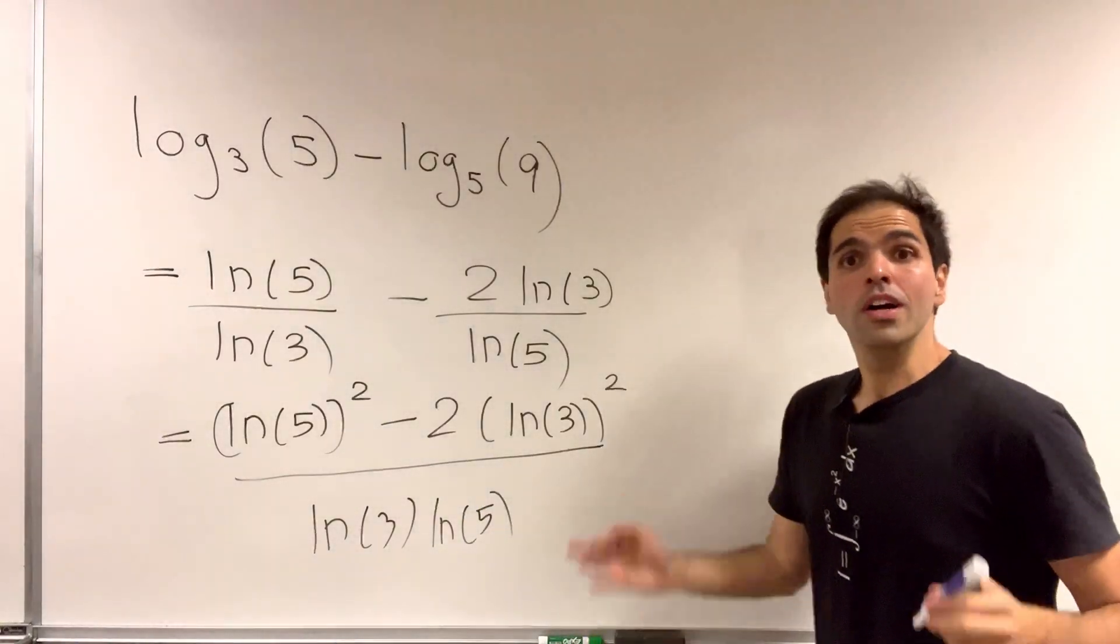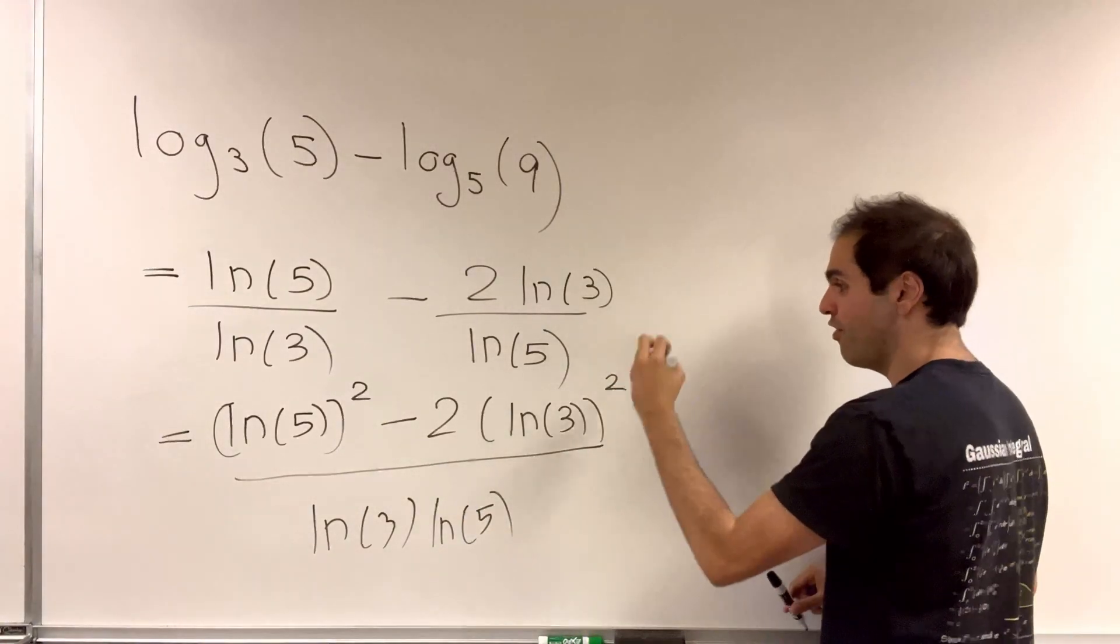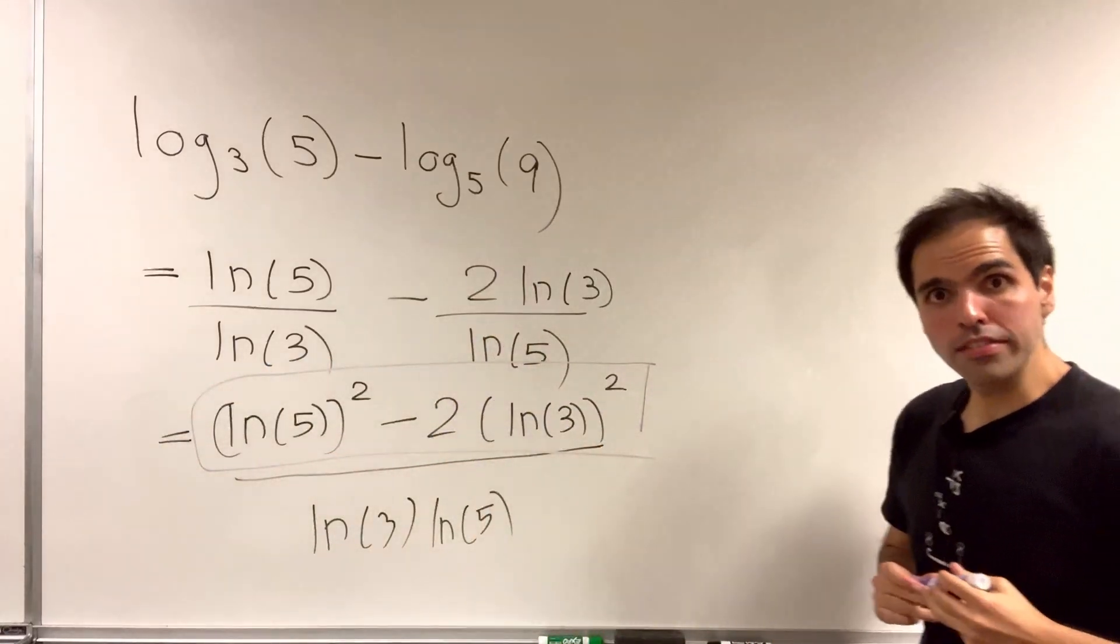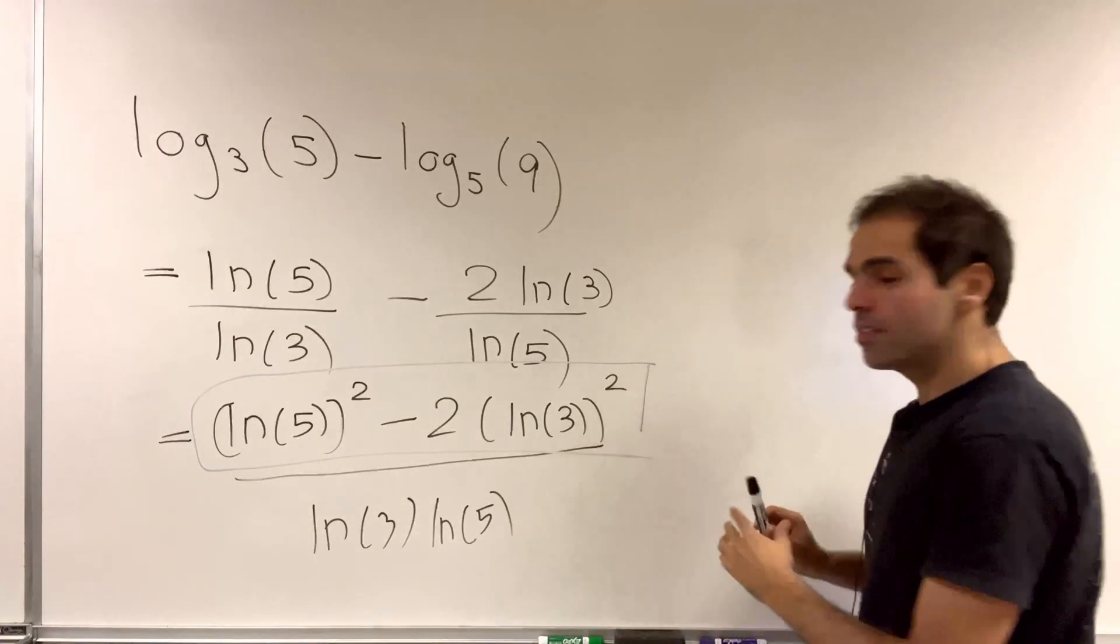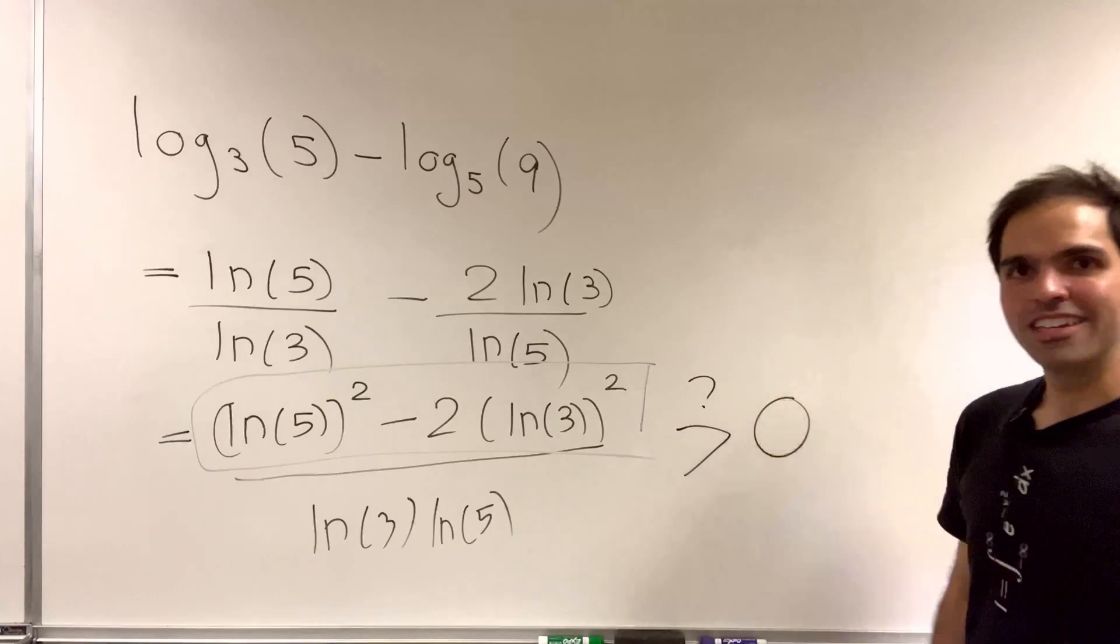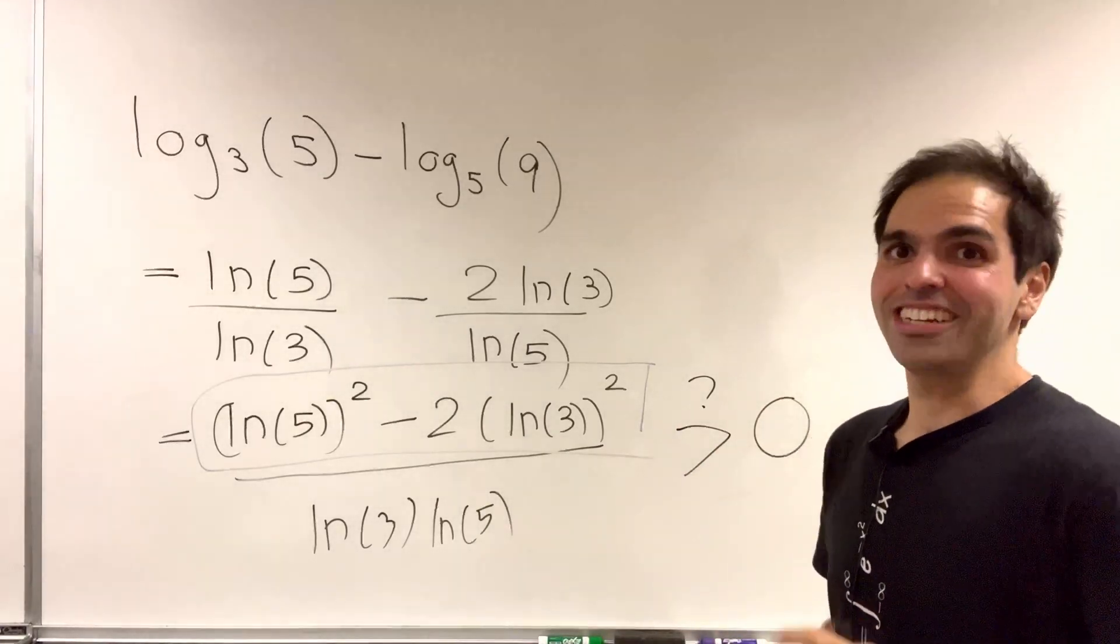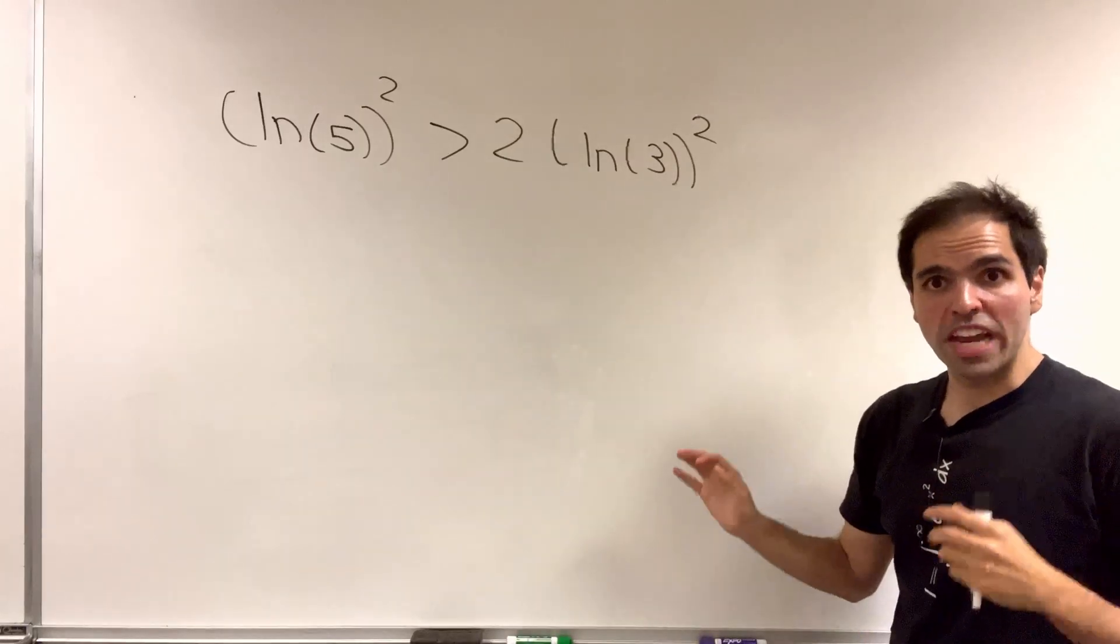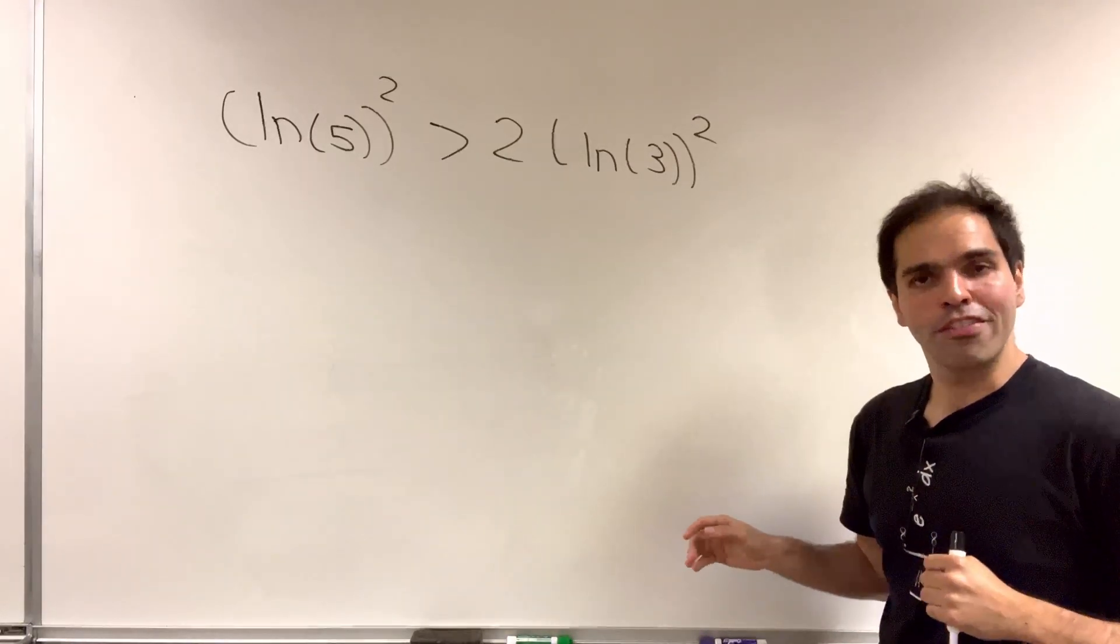And so the question boils down to the following: is the numerator positive or negative? And here I do suspect it to be positive, but it's just a suspicion because I know the answer. And so do we have ln of 5 squared is bigger than 2 ln of 3 squared?